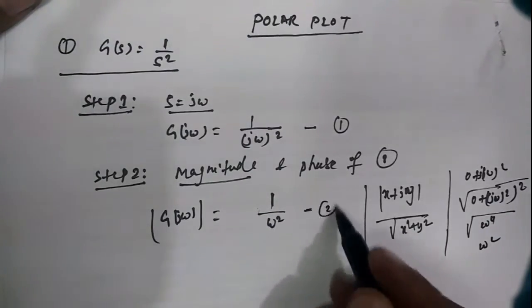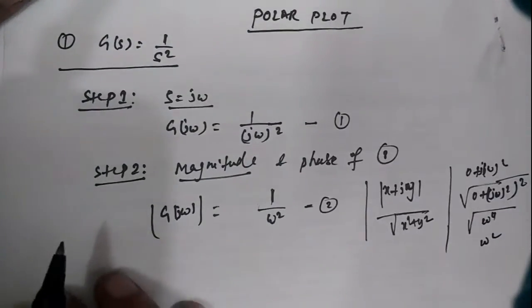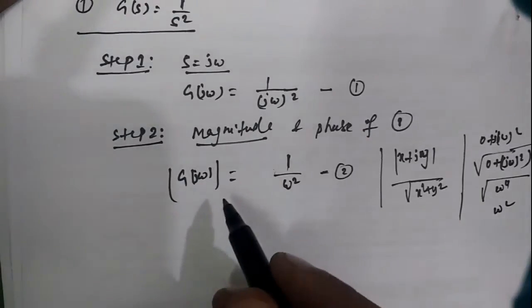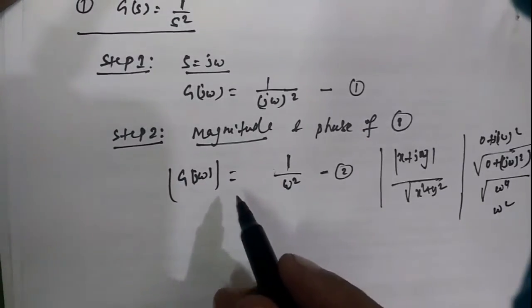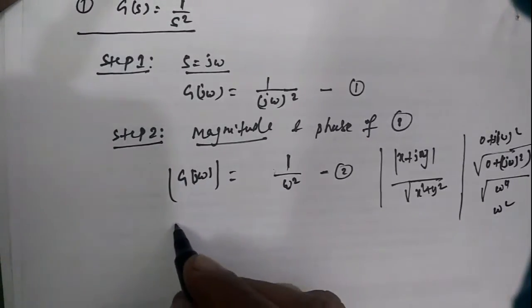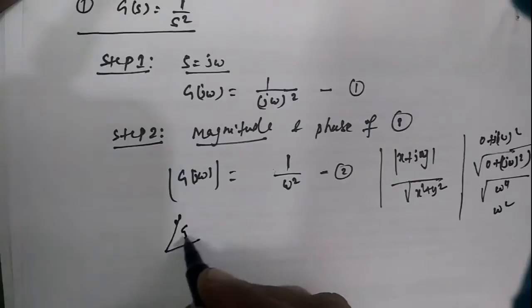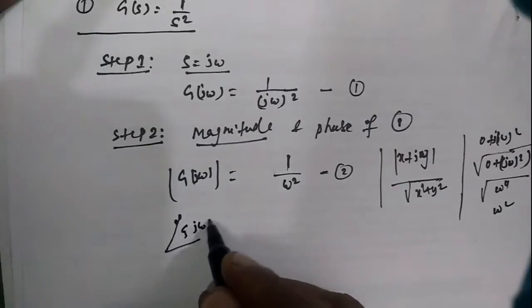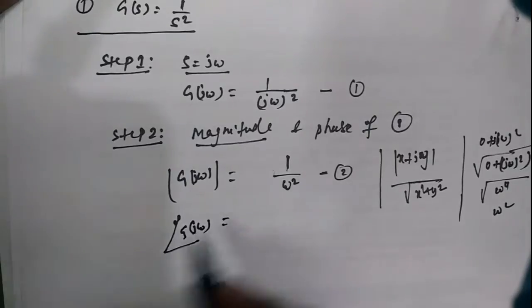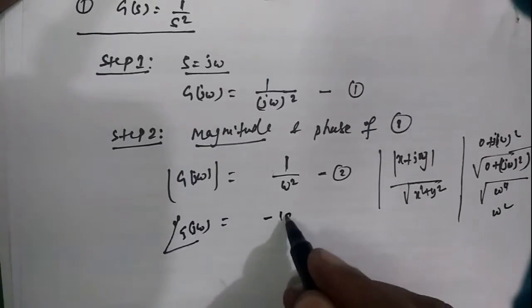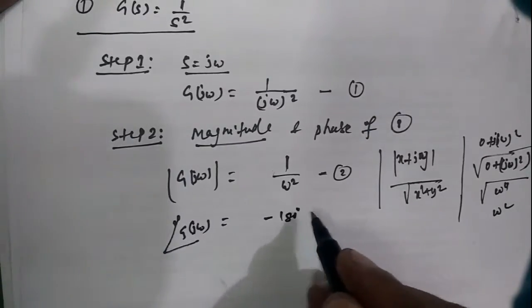The phase of G(jω) = 1/(jω)² is equal to −180°. This is equation number 3.